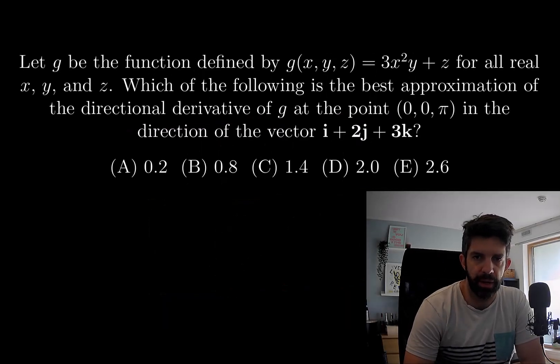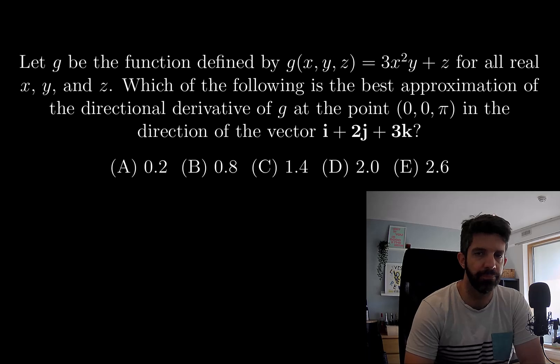Let g be the function defined by g(x, y, z) equals 3x squared y plus z for all real x, y, and z. Which of the following is the best approximation of the directional derivative of g at the point (0, 0, π) in the direction of the vector i plus 2j plus 3k?